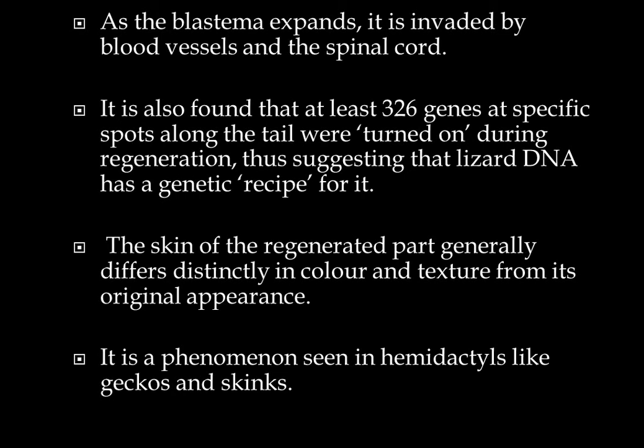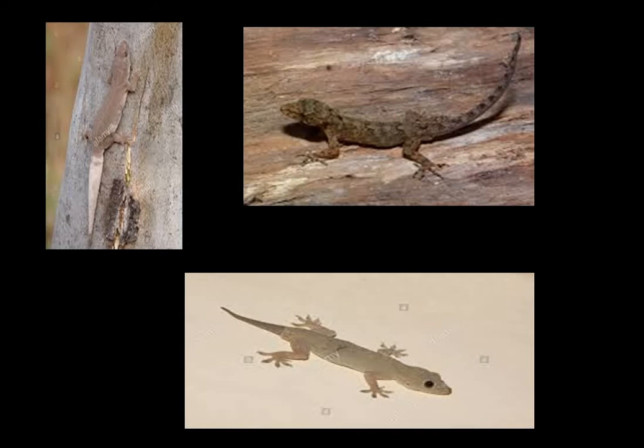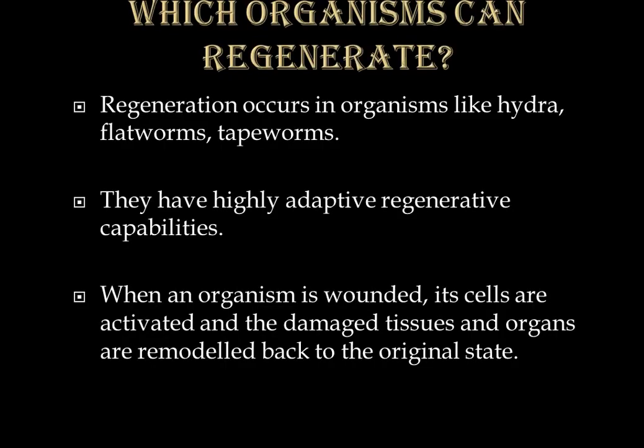The skin of the regenerated part generally differs distinctly in color and texture from its original appearance, a phenomenon seen in hemidactylus, geckos, and skinks. In hemidactylus, the color differentiation is observed sharply — the dark part is clearly distinct from the remaining fainter body. Color differentiation in the tail region compared to the rest of the body is visible in the diagrams.